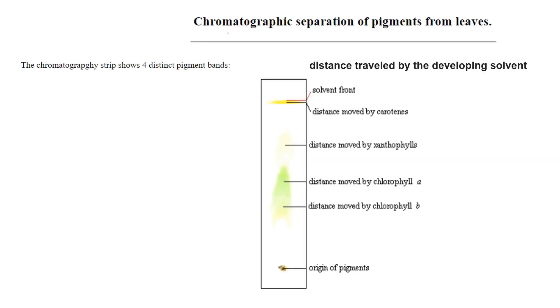As I said, if you want to separate pigments, this diagram shows chromatographic separation of pigments from leaves. Here, this X is the origin, the point of origin. From here the solvent will travel upward. And when it travels up, here it is written solvent front. This is the distance traveled by the developing solvent.